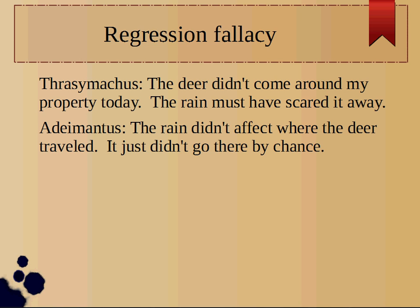In the second example, Thrusimica said that the deer didn't come around his property today, and the rain must have scared it away. Now Mantis points out that the rain didn't have any effect on where the deer traveled — it just didn't go there by chance.